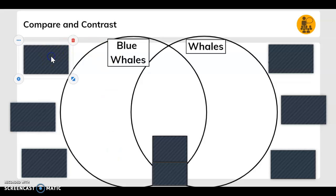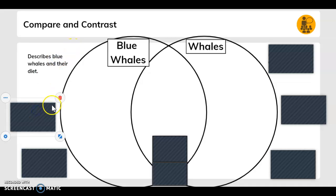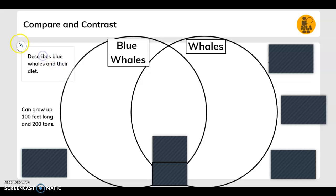Here is a Venn diagram where we are comparing and contrasting information. So we're just going to move the information to the right bubble. Blue whales and what we read. Blue whales describe blue whales and their diet.